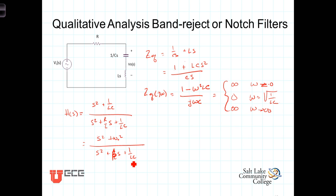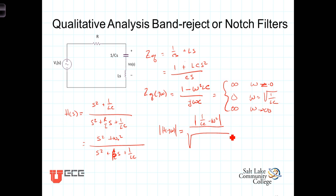Now the magnitude of the frequency response is: |H(jω)| = |1/LC − ω²| / √((1/LC − ω²)² + (R/L · ω)²), which is the same denominator as we had for the passband filter.